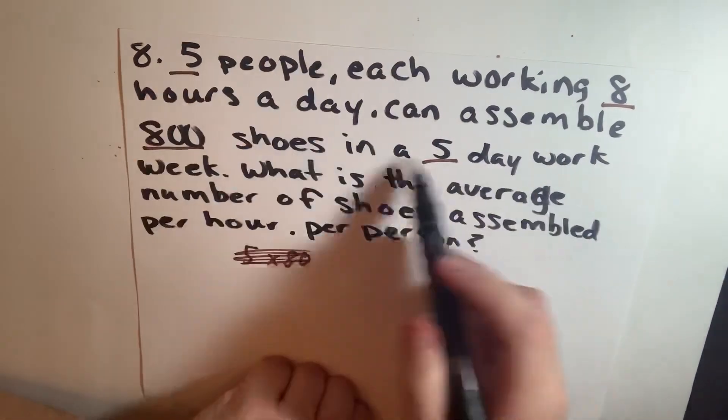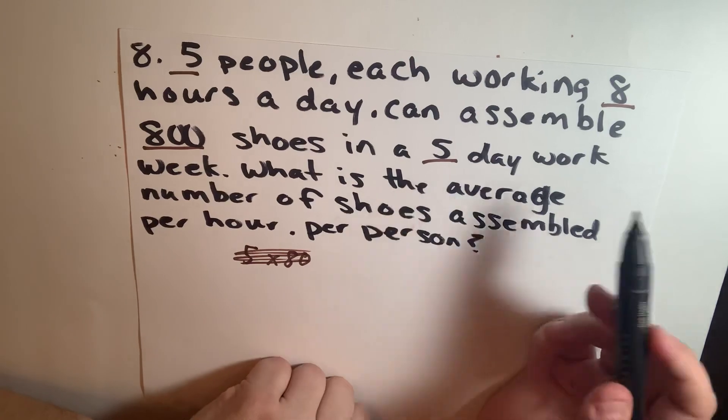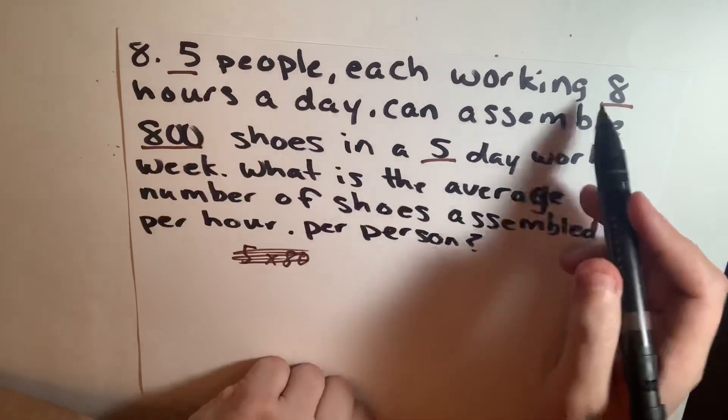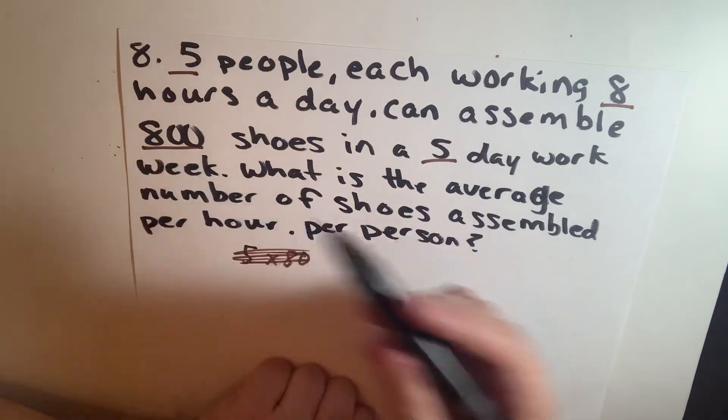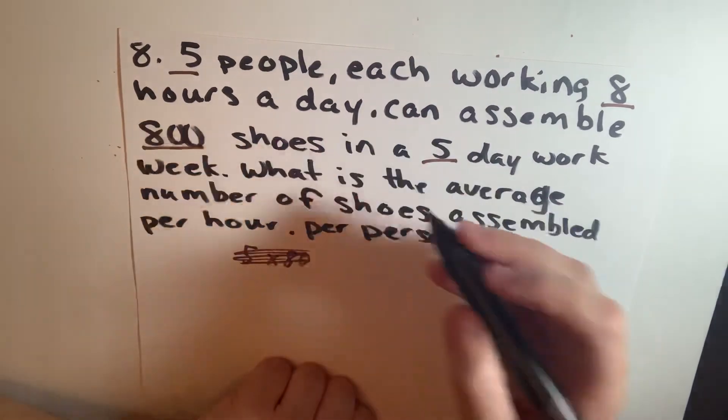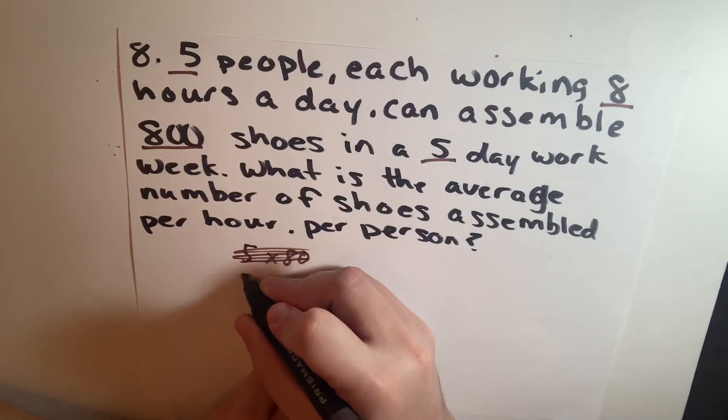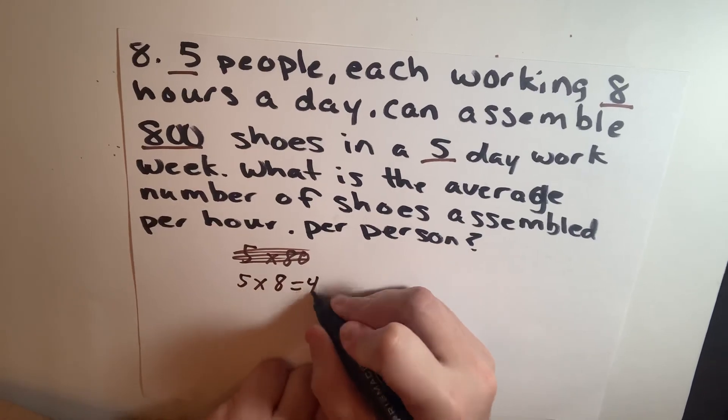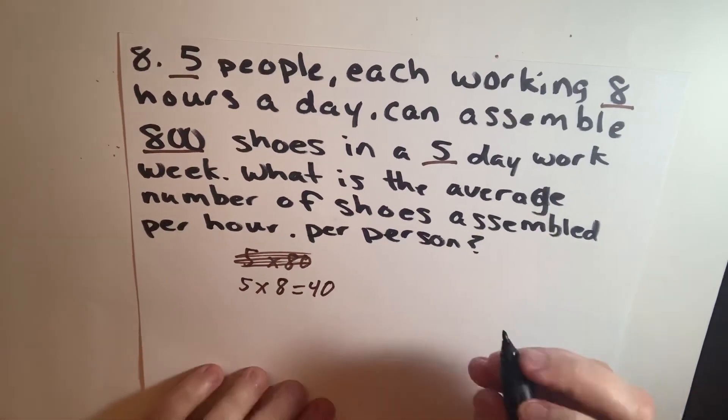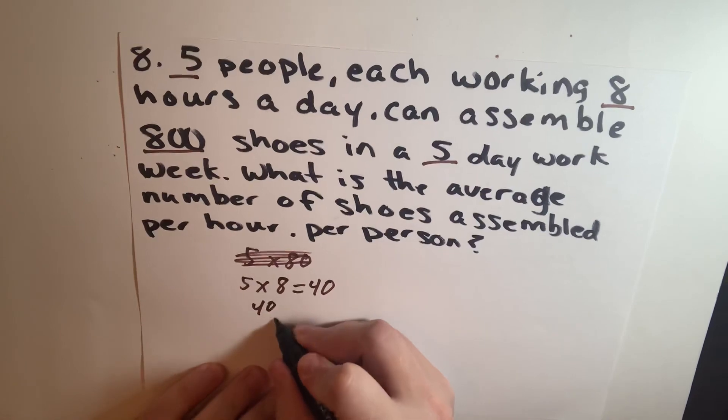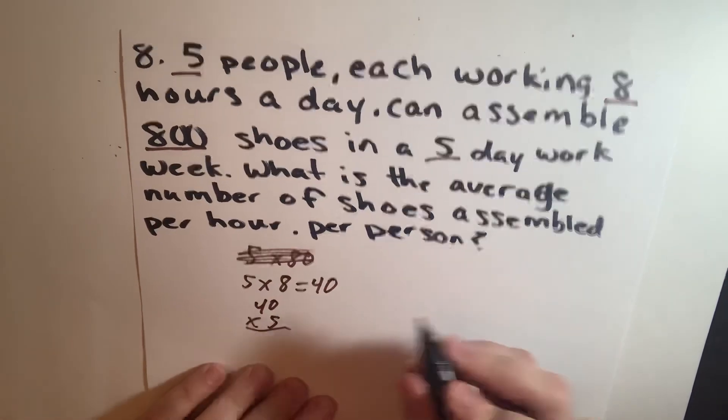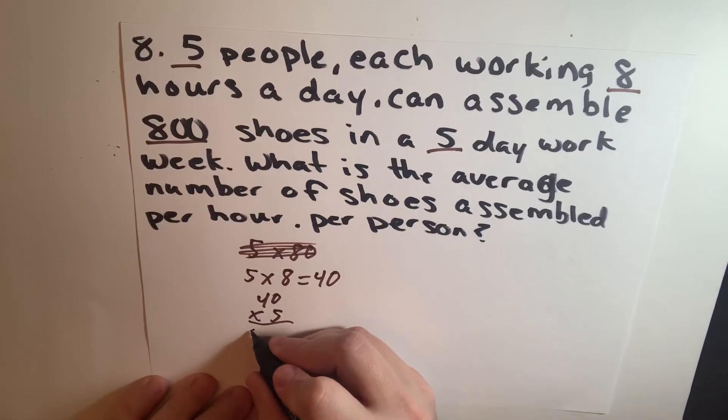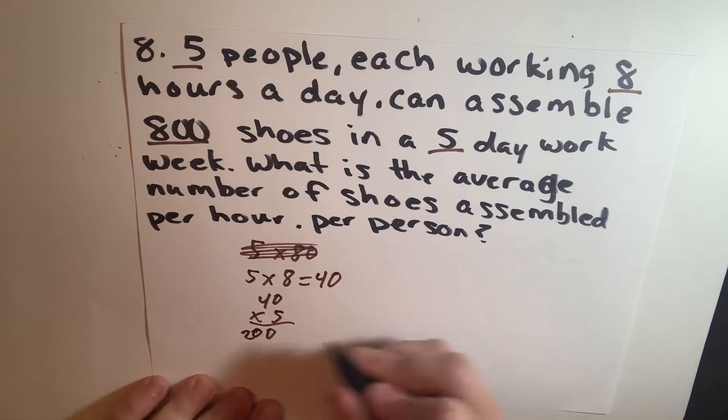Now these smaller numbers here, let's call this your manpower. This is the amount of work being put in and this is the result. So what we're going to do with the smaller numbers is we're going to multiply them. So 5 times 8 equals 40, and 40 times 5 equals 200.